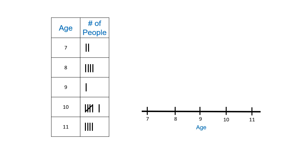So a line plot, boys and girls, is a graph and it shows information. The kind of information that it shows is the frequency of something happening. The frequency is how many times something happens or something occurs.